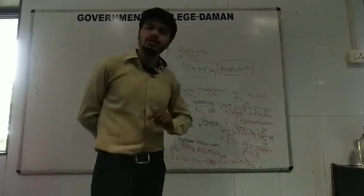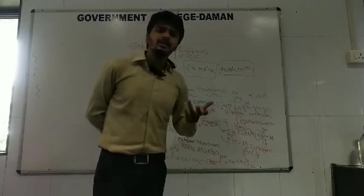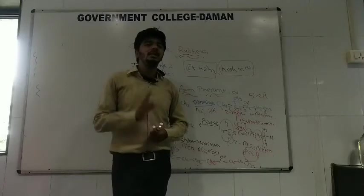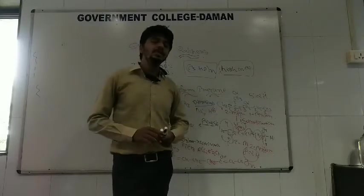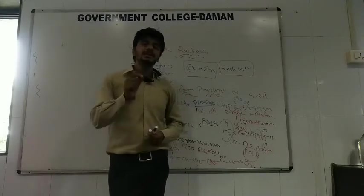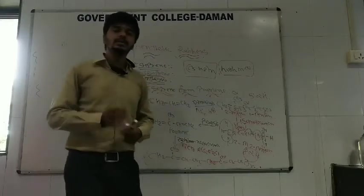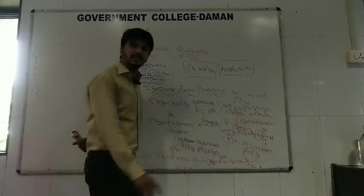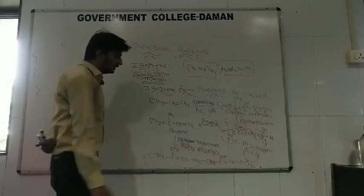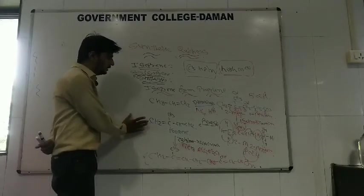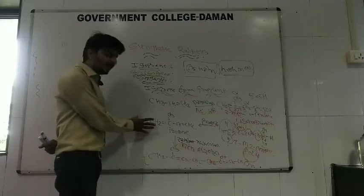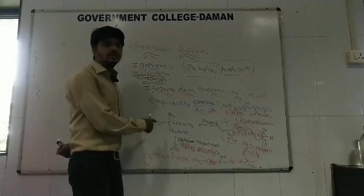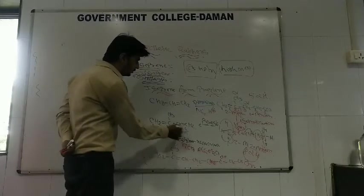Now the concept is to prepare polyisoprene. We need n times the isoprene unit, and we carry out the polymerization reaction in the presence of Ziegler-Natta catalyst. What is this Ziegler-Natta catalyst? Ziegler and Natta are two scientists who discovered one reagent — TiCl3 in Al(C2H5)Cl — and that is known as Ziegler-Natta catalyst. In the presence of this catalyst, we carry out the polymerization reaction of isoprene.